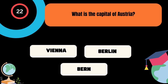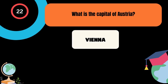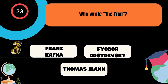What is the capital of Austria? A. Vienna, B. Berlin, C. Bern. And the correct answer is Vienna. Who wrote The Trial? A. Franz Kafka, B. Fyodor Dostoyevsky, C. Thomas Mann. And the correct answer is Franz Kafka.